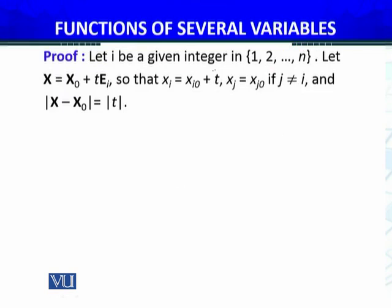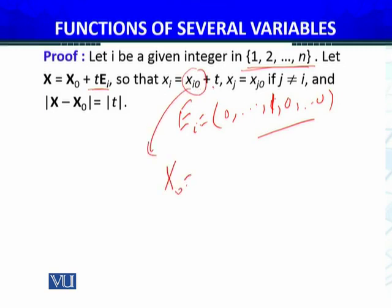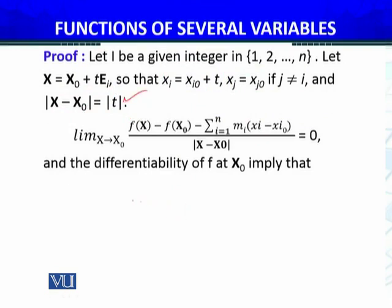Let i be a given integer in {1, 2, ..., n}. Let x = x0 + tei, where ei is a unit vector—all entries are zero except the i-th entry which is one. So xi = xi0 + t, and xj = xj0 if j ≠ i. The difference between x and x0 is only at the i-th position, and |x - x0| = |t|.